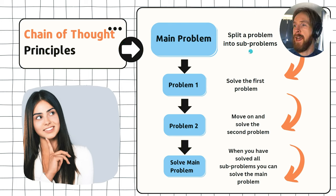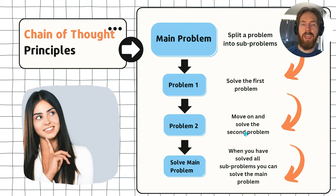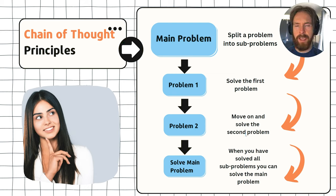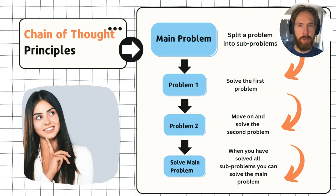We have the option to prompt it to split the problem into sub-problems. We just prompt it to make a list of all the steps we have to solve before we can solve our main problem. Then we just start by solving problem one, problem two. And when we have solved all those intermediate steps, we can wrap it up by solving our main problem.